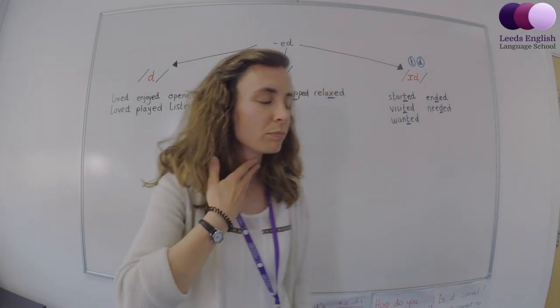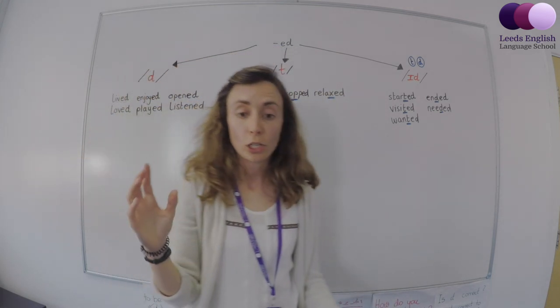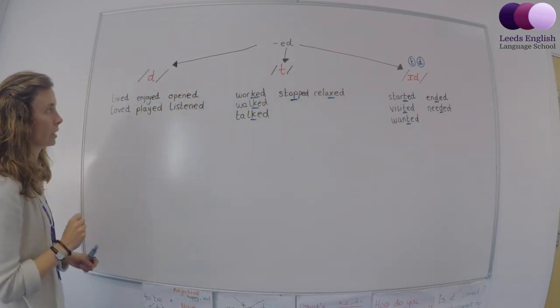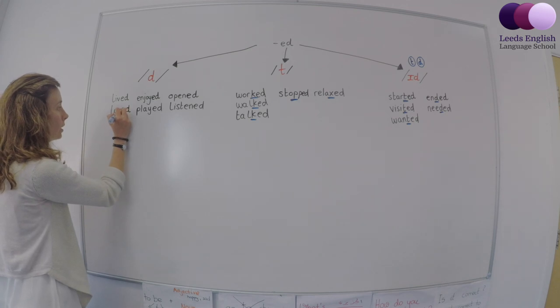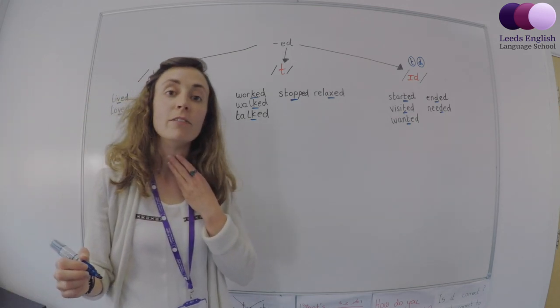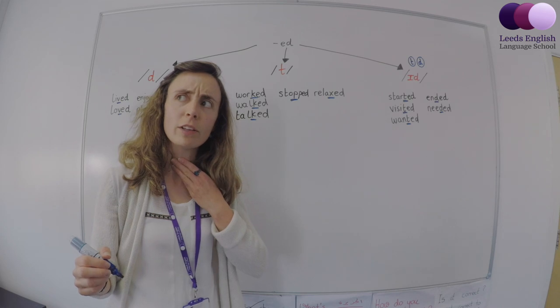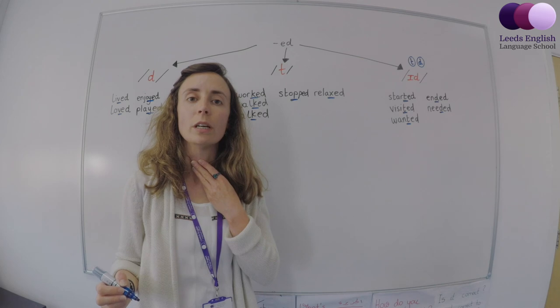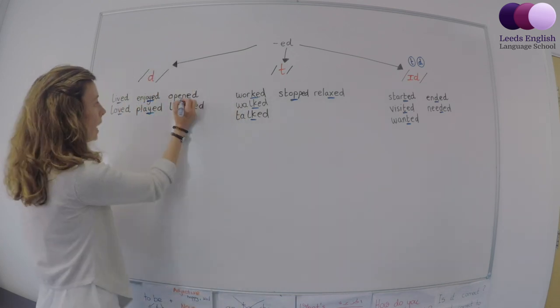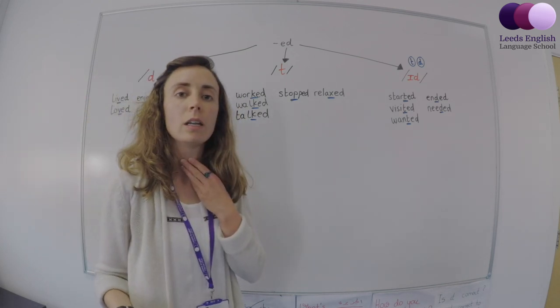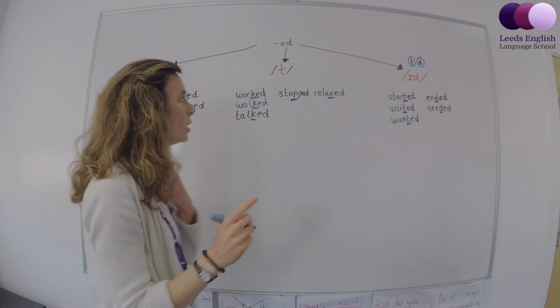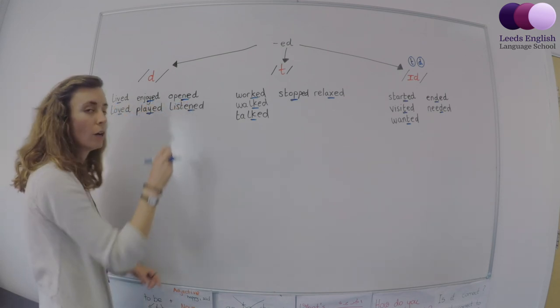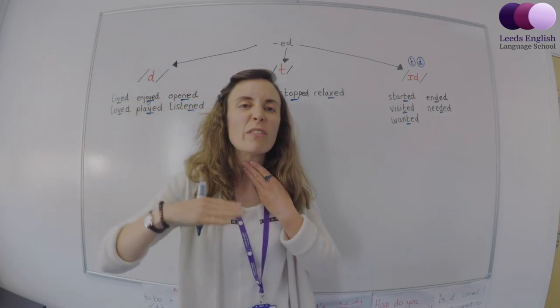Well, hopefully you can't feel the vibration. Let's compare it to this side. Live. I can feel something. Play. Enjoy. And N. So this group of letters, the V, the Y, and the N, you can feel a vibration. Try again. V. Y. N.